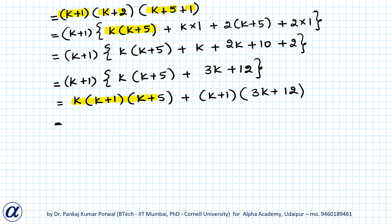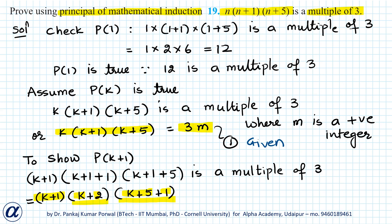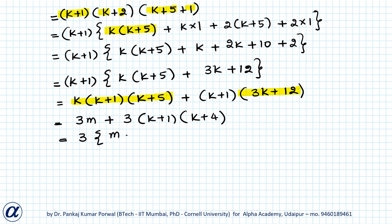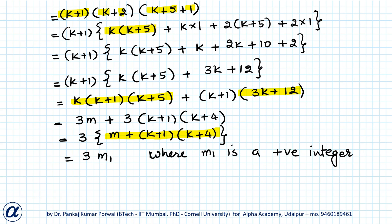Now I substitute k(k+1)(k+5) = 3m from equation 1. So I get 3m + (k+1)(3k+12). From 3k+12 I can take 3 common, giving 3(k+4). So from the whole expression I can take 3 common, giving 3[m + (k+1)(k+4)]. Since m and k are positive integers, the whole expression in brackets is also a positive integer, so I can write this as 3m₁ where m₁ is a positive integer. This shows that P(k+1) is true. Hence proved.